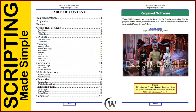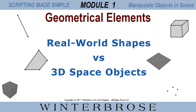We'll cover seven different modules, which we're going to go over right now. In Module 1, we're going to cover some of the geometrical elements. We're going to cover how real world shapes, like a cube, a plane, or a point, relate to 3D space and 3D objects as defined in most 3D applications.